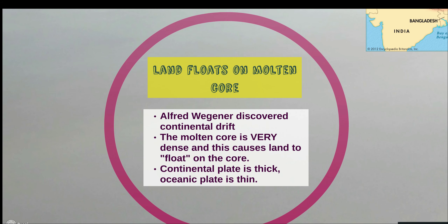The crust of our planet kind of floats on the inner layers. Because it's floating and moving around, there are actually borders and sections of our planet that you can differentiate from each other. These sections are called tectonic plates and there are two types: continental plates, which are land material, and oceanic plates, which are underneath all the water.